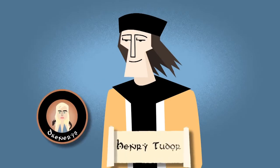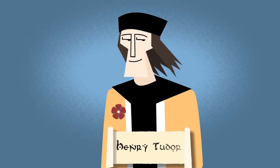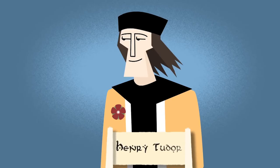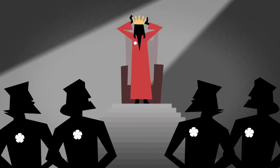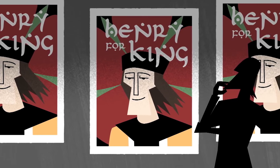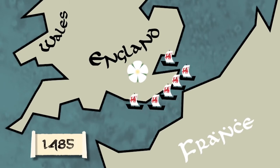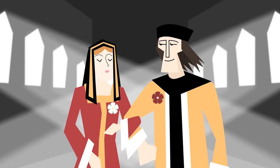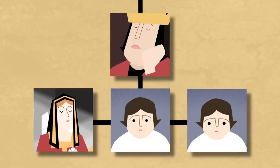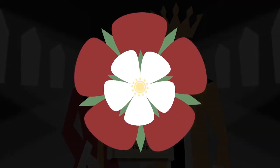Henry Tudor was a direct descendant of the first Duke of Lancaster, raised in exile after his father's death in a previous rebellion. With Richard III's power grab causing a split in the York faction, Henry won support for his royal claim, raised an army in France, and crossed the Channel in 1485, quickly defeating Richard's forces. By marrying Elizabeth of York — elder sister of the disappeared princes — the newly crowned Henry VII joined the two roses, finally ending nearly a century of war.